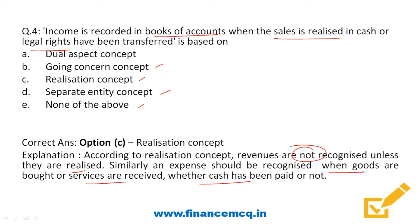Under dual aspect concept, every transaction is recorded on two sides of the books of account — debit side and credit side. For example, a purchase from Mr. Raju for ₹5,000 means purchase account is debited by 5,000 and Mr. Raju's account is credited with 5,000. Under going concern concept, we assume the company will not discontinue operations in the near future. Under separate entity concept, also known as economic entity concept, the business is treated as a separate legal entity from its owners, so all assets and liabilities are in the company's name.